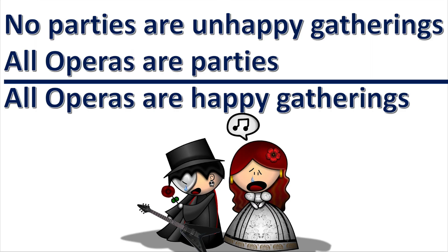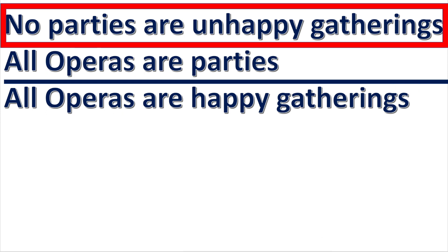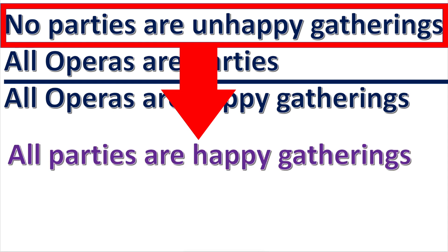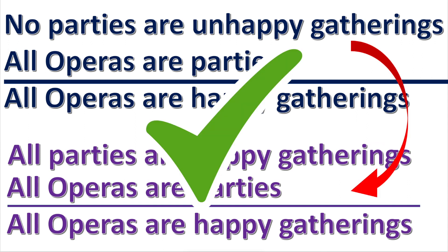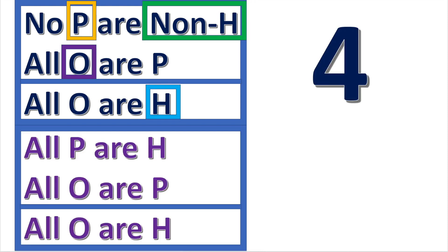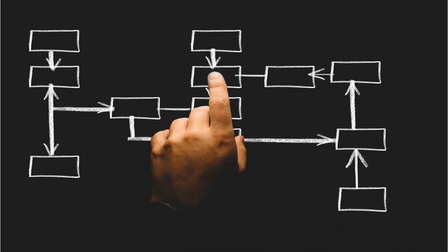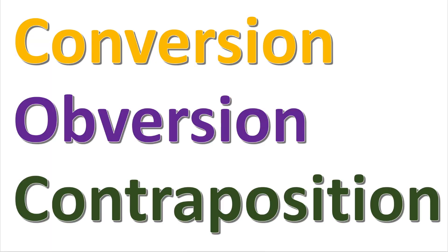Now look at this syllogism. Notice it has four terms. We can reduce it to three terms and put it into standard form by obverting the first premise. The new syllogism is logically equivalent to the original. We take the syllogism that has more than three terms and create a new logically equivalent syllogism using the operations of conversion, obversion, and contraposition.